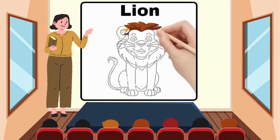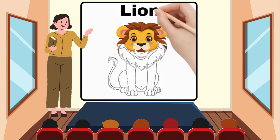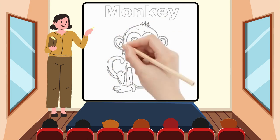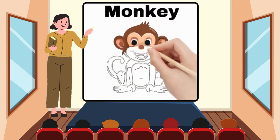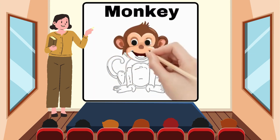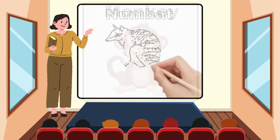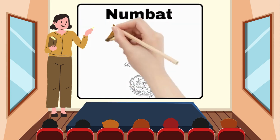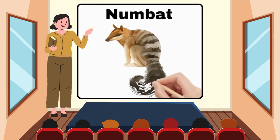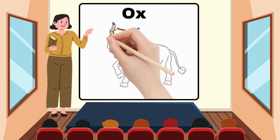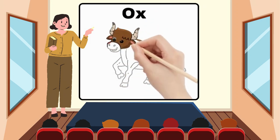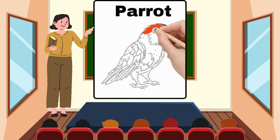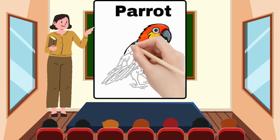L for Lion. M for Monkey. N for Numbat. O for Ox. P for Parrot.